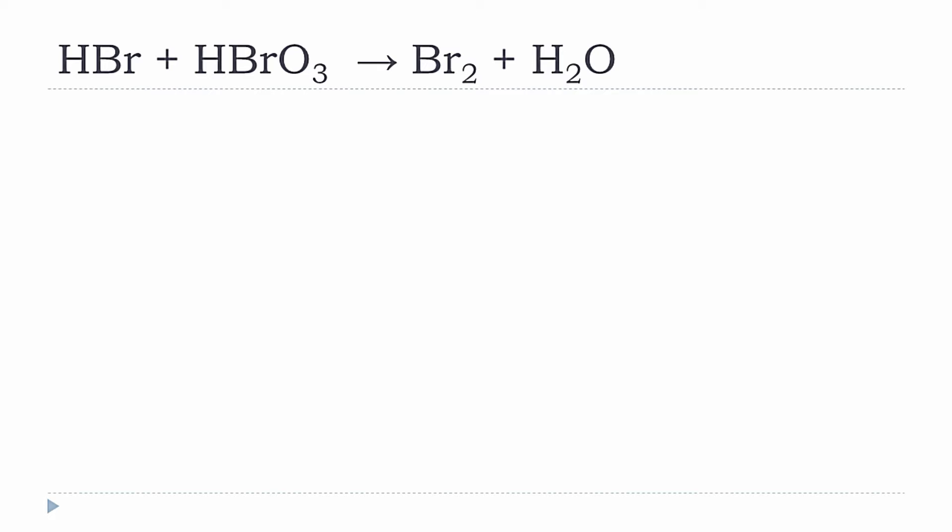The reaction produces bromine and water. If you look at this reaction, you will notice that two compounds of bromine — HBr and HBrO3 — are both producing bromine as a product, and the second product is water. When you have such a scenario, you may have to take a slightly different approach.